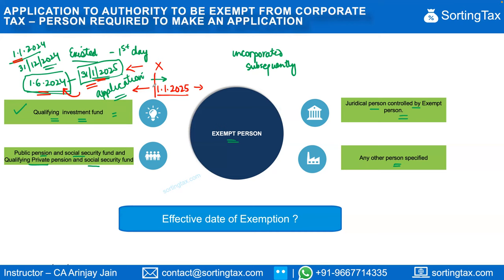However, if the approval does not mention any specific date, the exemption will be applicable from the first day of the financial year in which the application is made — so from January 1, 2024. For entities incorporated subsequently, the same principle applies: if the approval mentions a specific date, that applies; otherwise the exemption is from the first day of the financial year of incorporation.